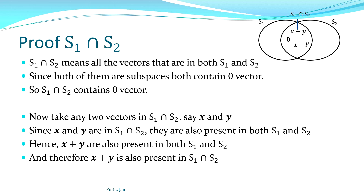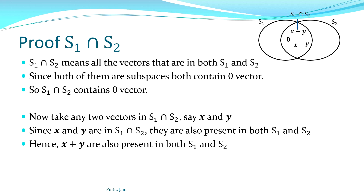That is how we prove something is a subspace or vector space. To disprove it, giving one counterexample is enough; to prove it, you must verify all the conditions. In the next video we will formally introduce linear combinations. Thank you for watching.